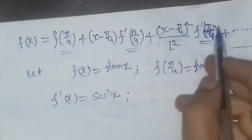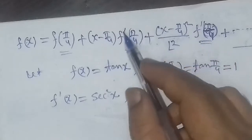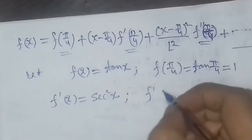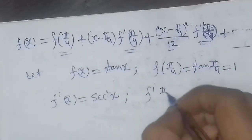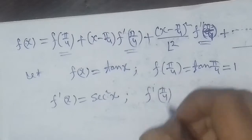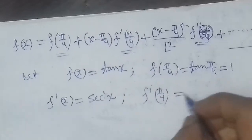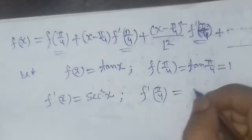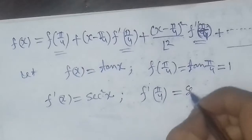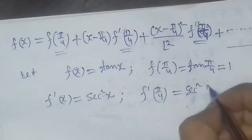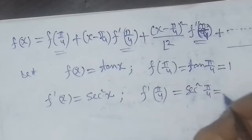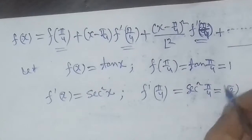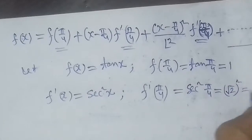Now we give the derivative function its value at π/4. So f'(π/4) equals sec²(π/4). Since sec(π/4) equals √2, we get sec²(π/4) equals 2. So f'(π/4) equals 2.